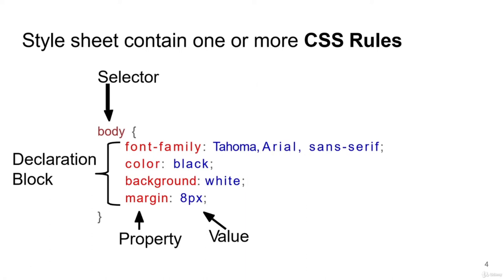CSS contains one or more CSS rules. The rules for CSS include a selector, a property, and some value. For example, for a body tag in HTML, I am going to apply some styles in CSS. First I name which tag I'm applying the style to — so I name it 'body' — then I open and close curly braces. Inside, I specify what styles I want to give for that particular tag, here the body tag.